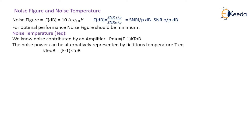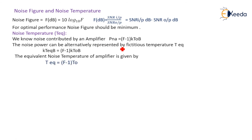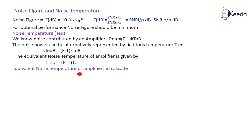The noise power contributed by an amplifier is given by P_NA = (F − 1) × K × T0 × B. This noise power can alternatively be represented by a fictitious temperature T_equivalent, so K × T_equivalent × B = (F − 1) × K × T0 × B. Therefore, the equivalent noise temperature of an amplifier is T_equivalent = (F − 1) × T0.